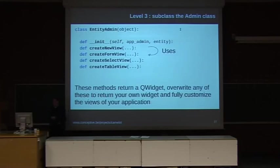Then the next level of customization is by subclassing the entity admin class. So the entity admin class actually specifies how all forms and tables are presented to the user. It has a couple of methods which create the forms and the table views and the select views. And what you can do is you can just simply overwrite those functions and fully customize how your table or your form should look like. Now I have no example of this since I have never done so myself.